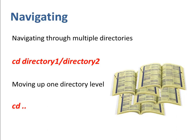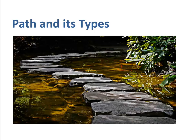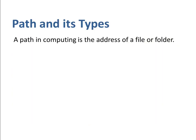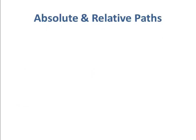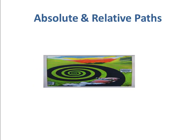It is important to understand what is path in computing and what are its types. Just like a path can make you reach your home, a path in computing is the address of a file or folder. So, C:\Documents and Settings\user\Downloads in Windows and /home/user/downloads path in Linux would take you to the downloads folder. There are two kinds of paths: absolute and relative.